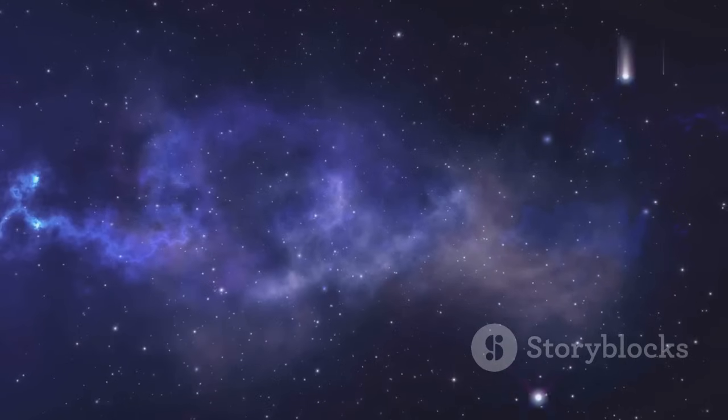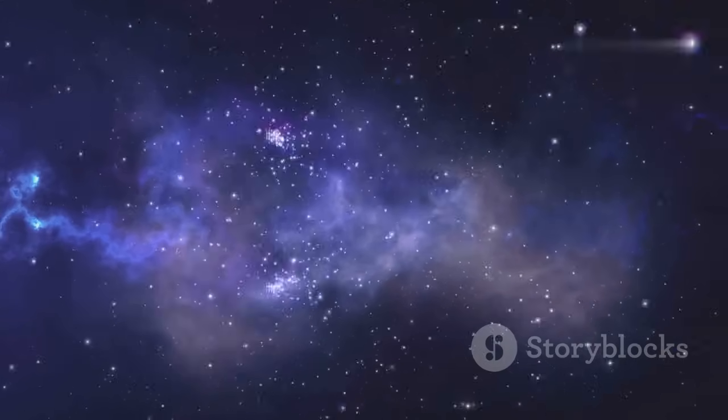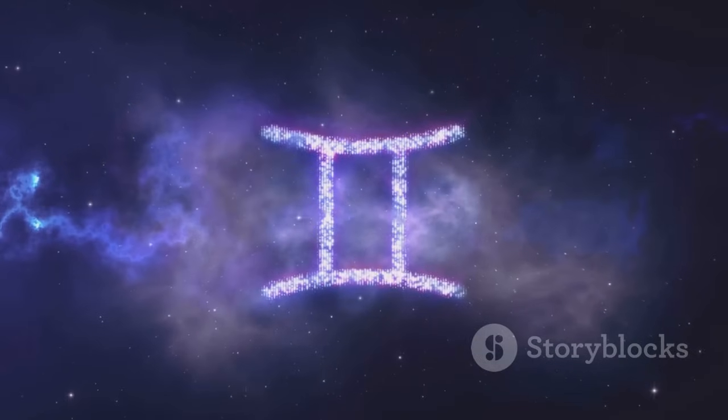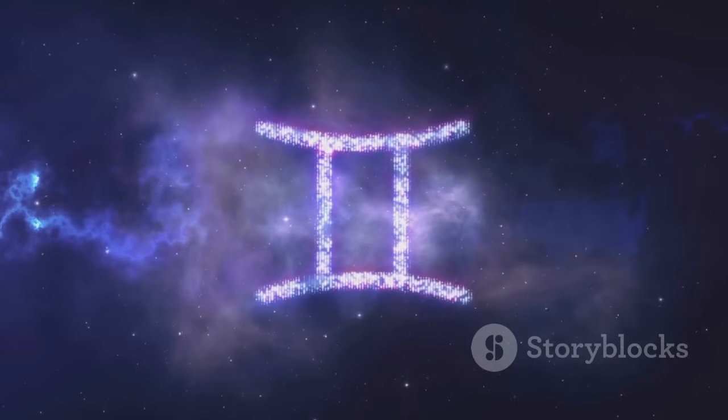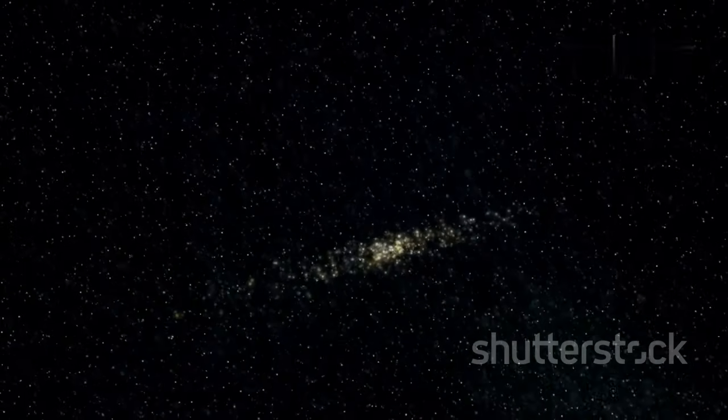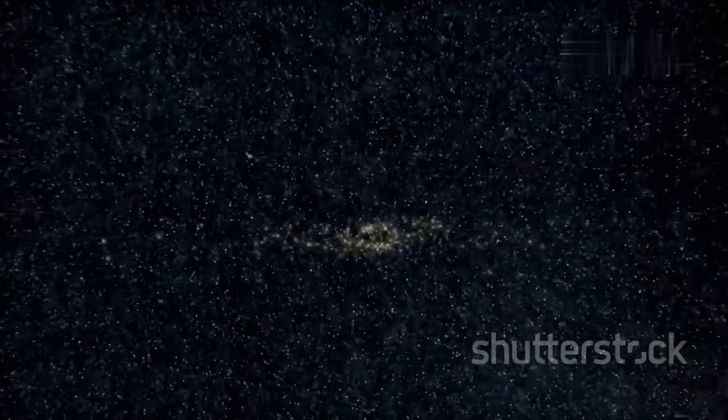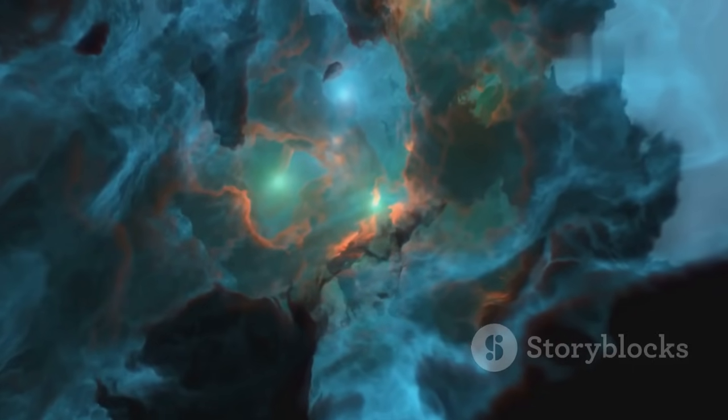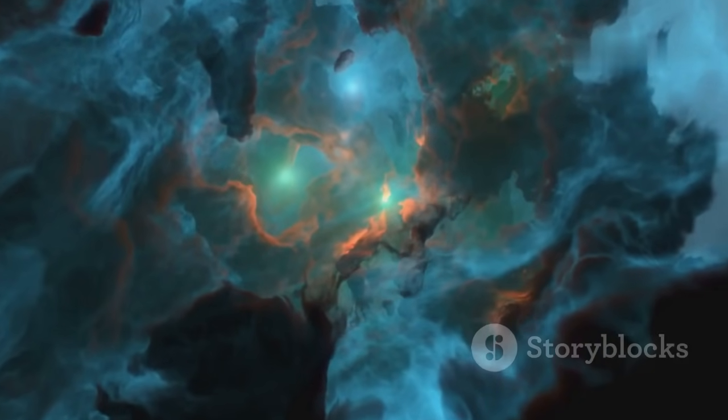Our solar system formed from such a cloud seeded by countless supernovae. The dust and gas that once belonged to other stars became the building blocks of our world. That's why Earth is rich in heavy elements and why life could emerge. Without this cosmic recycling, our planet and life itself would not exist. The death of one generation of stars provides the raw material for the next.